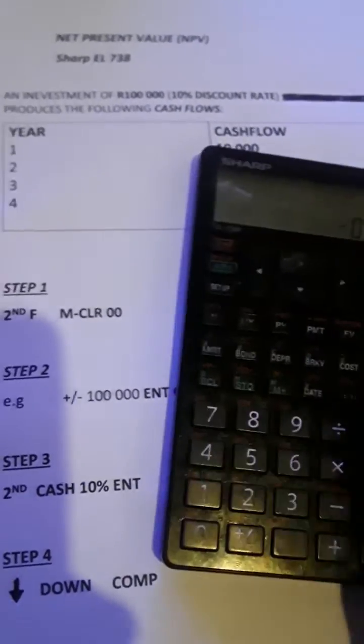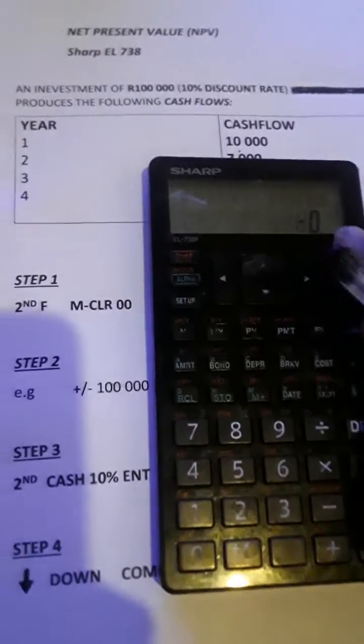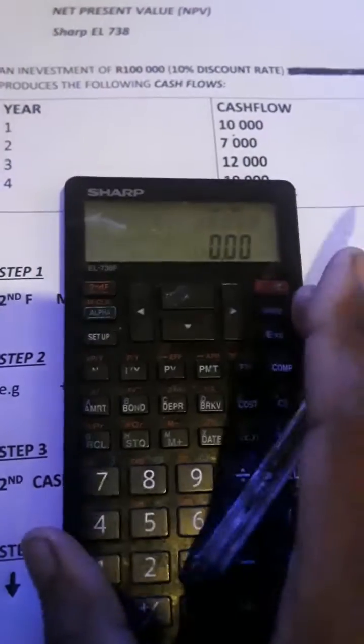The one that I have is a Sharp EL738 model. Now the first thing that you do, this is with all calculations so that previous calculations don't interrupt with the current ones.